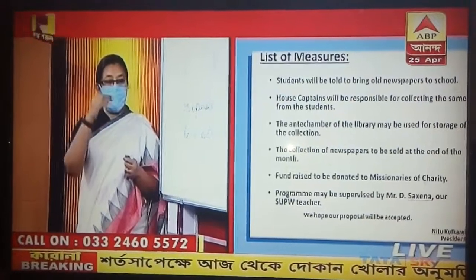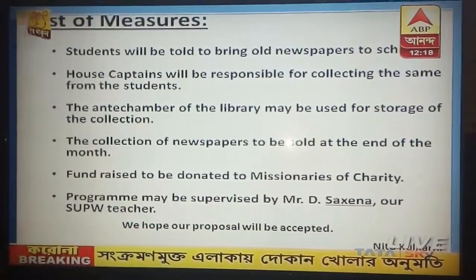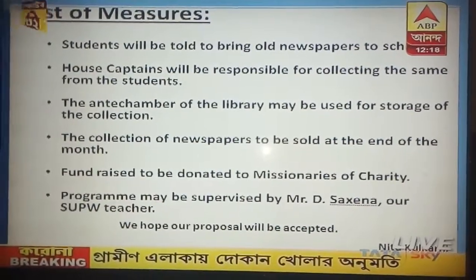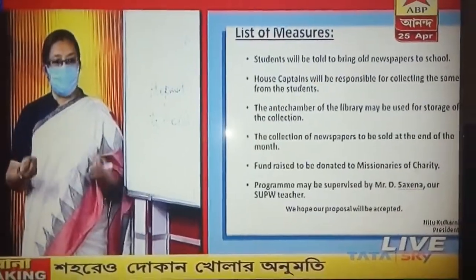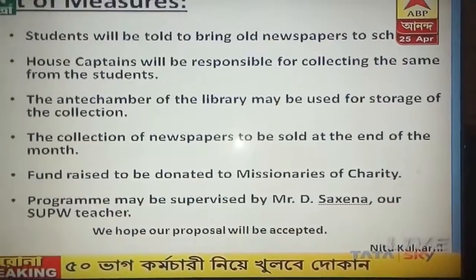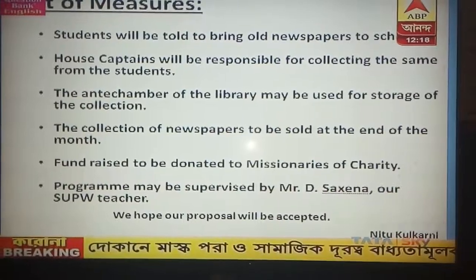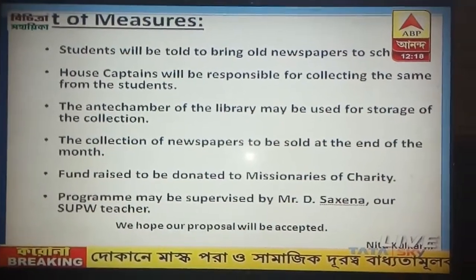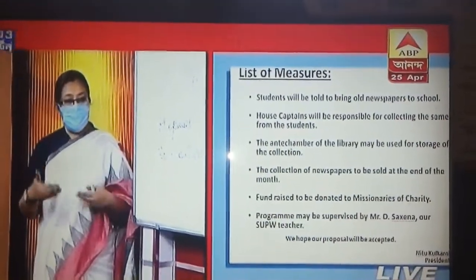In the list of measures, you enlist the points step by step — how you will go about with the program. For a newspaper collection program, the first thing: students will be told to bring newspapers to school. Simple — students bring old newspapers to school. That's the first step. What's the next step? Someone needs to collect the newspapers. So: the house captains will be responsible for collecting the newspapers from the students. Now you are delegating the job and involving a team.